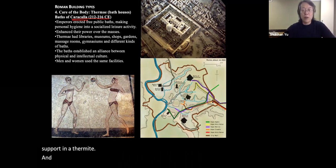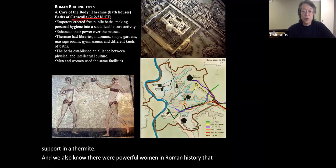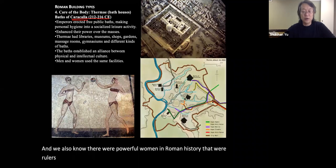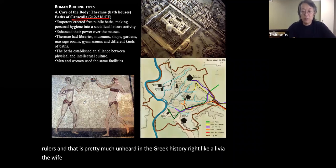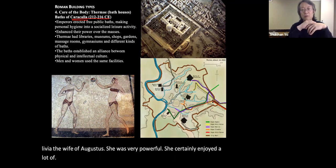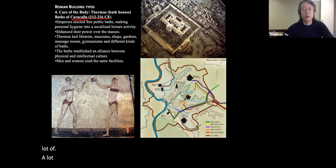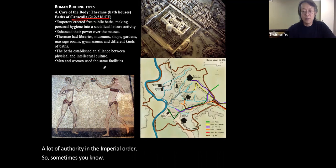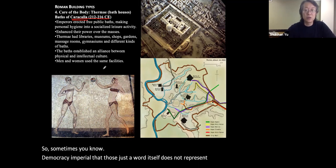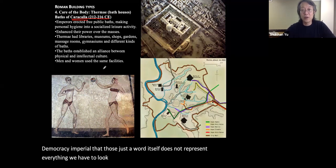There were also powerful women in Roman history who were rulers — something pretty much unheard of in Greek history. For example, Livia, the wife of Augustus, was very powerful and enjoyed a lot of authority in the imperial order. So sometimes democracy or imperial — those are just words. We have to look into how life actually operated under those systems.